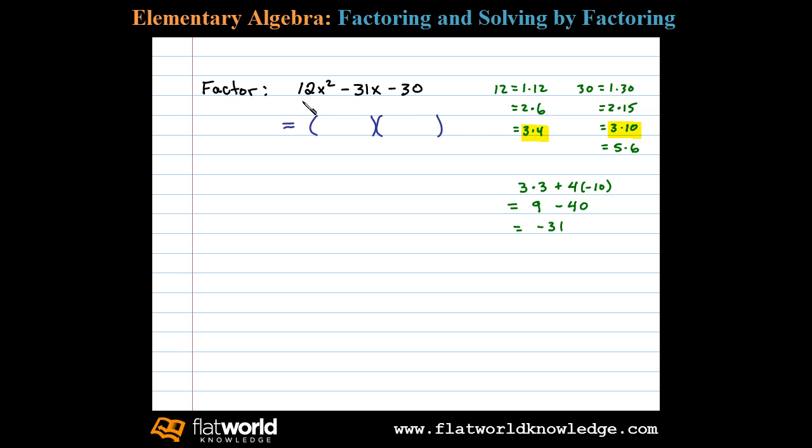We choose to factor 12x squared as 3x times 4x. 3x times 4x is 12x squared. We choose to factor negative 30 as negative 10 times positive 3. Negative 10 times positive 3 is negative 30.